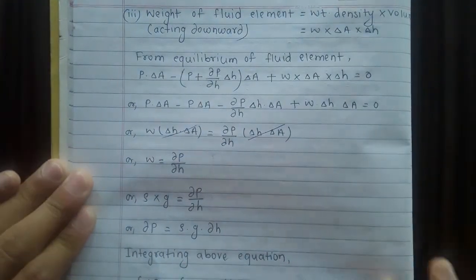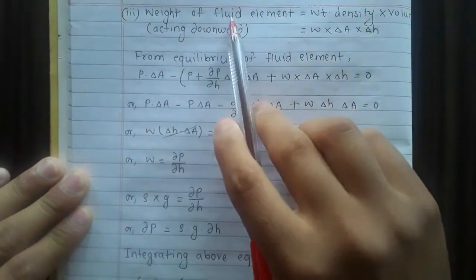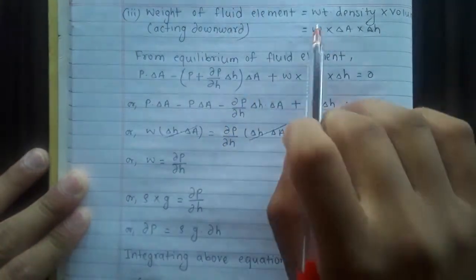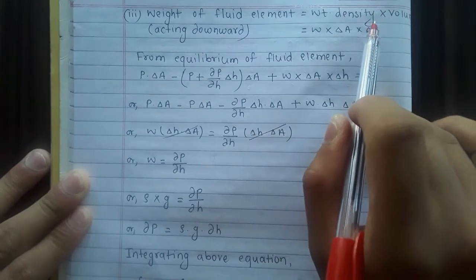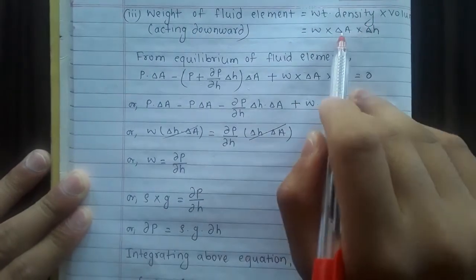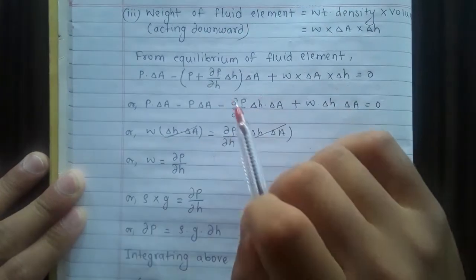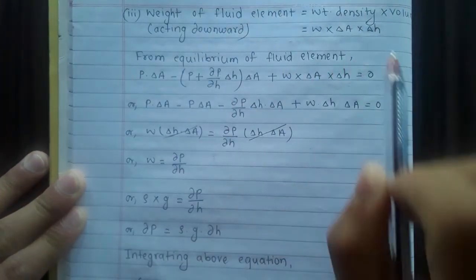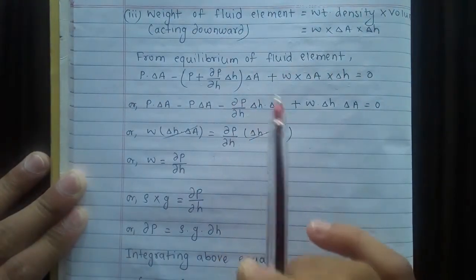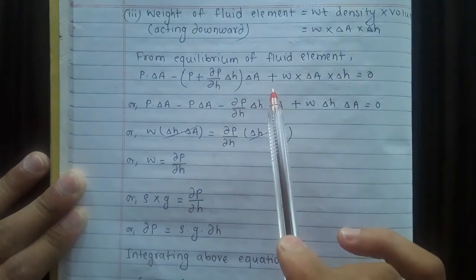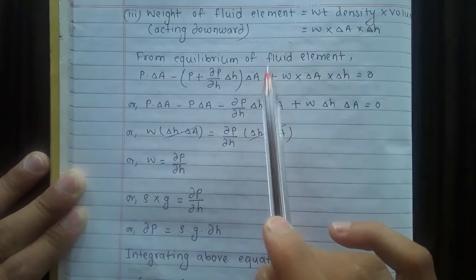Weight of fluid element acting downward is weight density times volume, which is W times delta A times delta H. From equilibrium of fluid element, downward acting forces plus and upward acting forces minus.